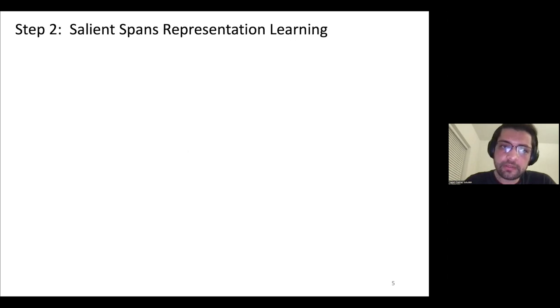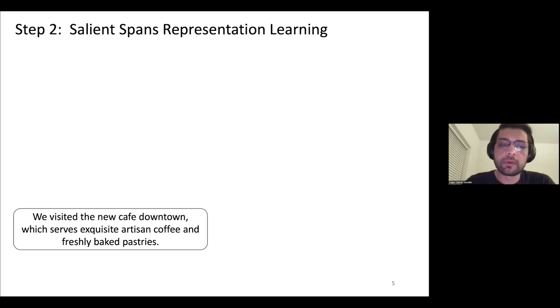Here's the second step, which is the salient span representation learning via our language modeling task. So we have this input. With the first step, we identify the salient spans, which were basically two phrases. Then we mask these spans to have a masked input.